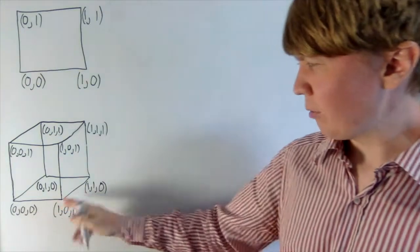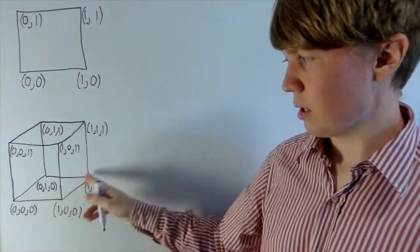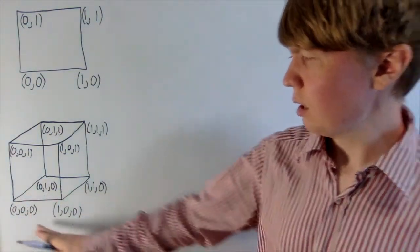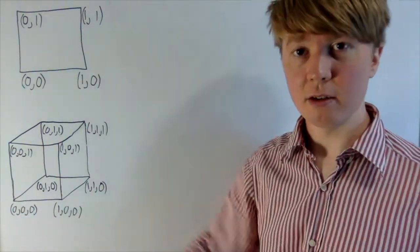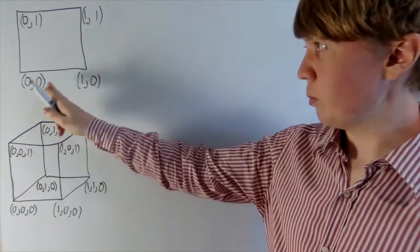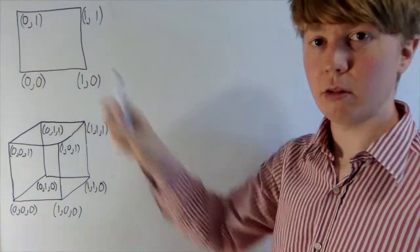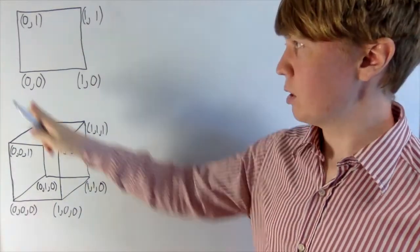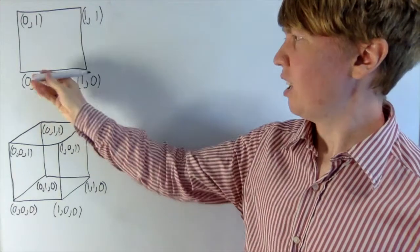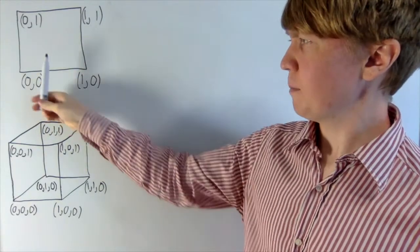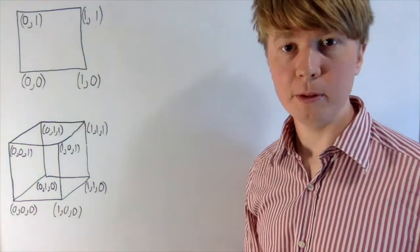I've got a unit cube here in the sense that each of the side lengths is one unit. We've also started at the origin, (0,0,0). I've done the same sort of picture in two dimensions — your 2D equivalent of a cube is a square. We start at the origin, with the x-axis going along this way and the y-axis going up.